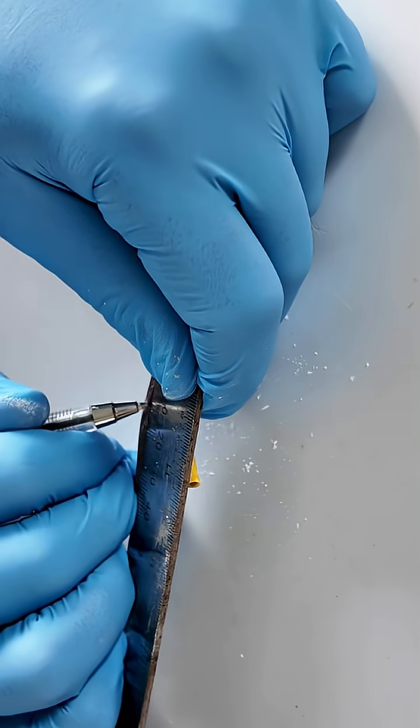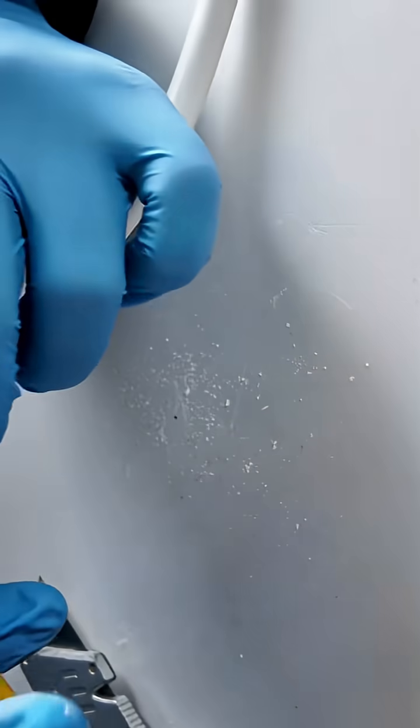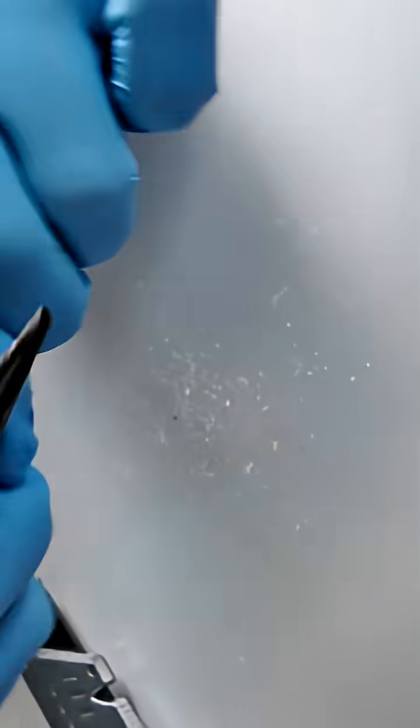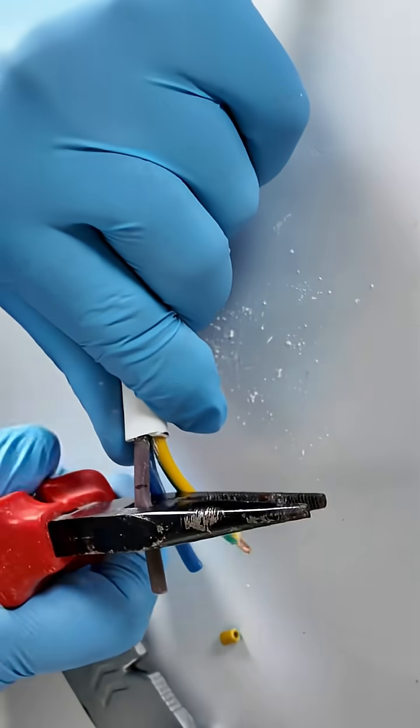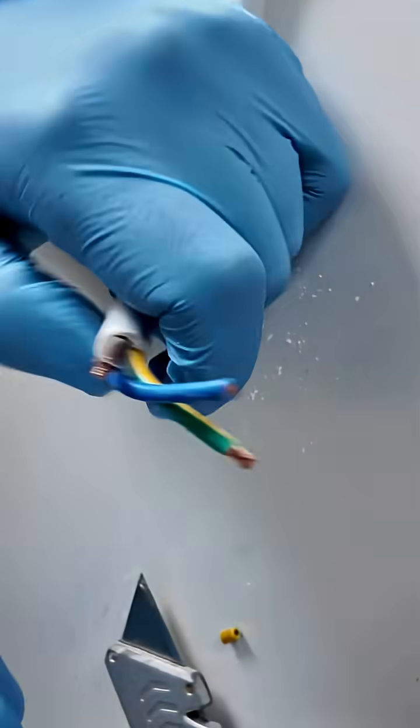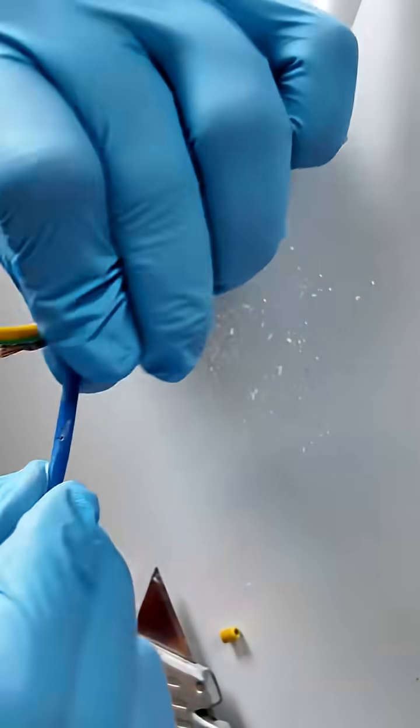Green-yellow earth: leave this wire 32 mm from the outer insulation. Blue neutral: cut to 22 mm. Brown live: 12 mm. Strip about 0.5 cm of insulation from each wire end.